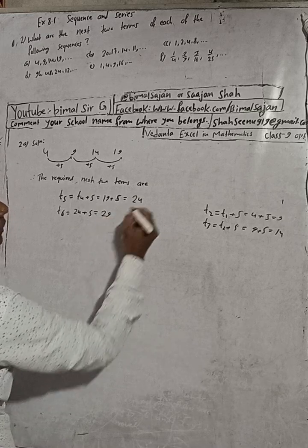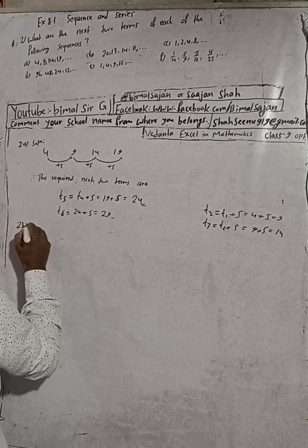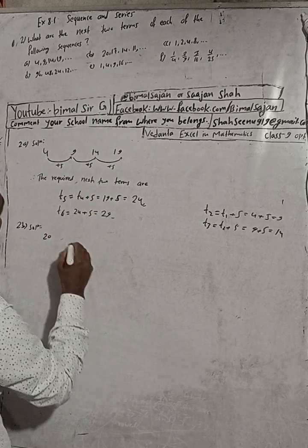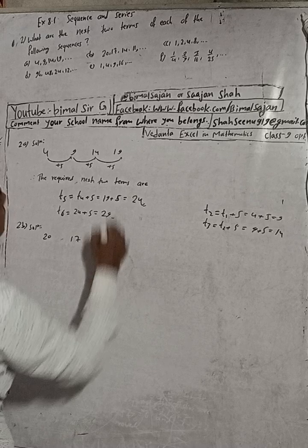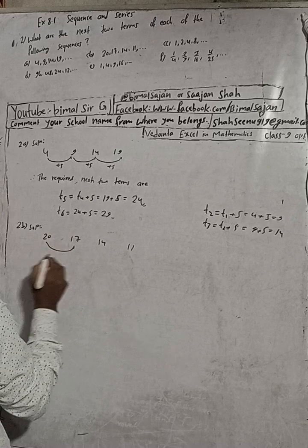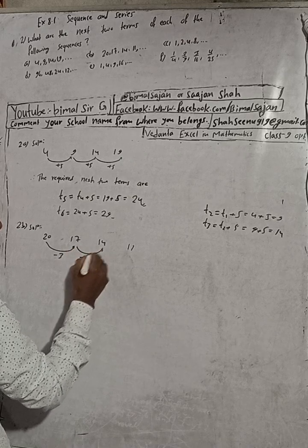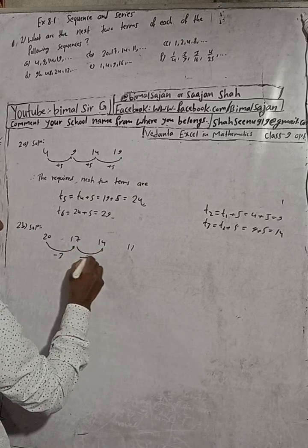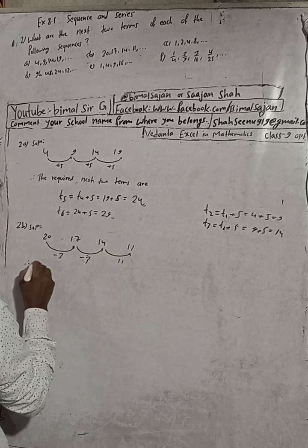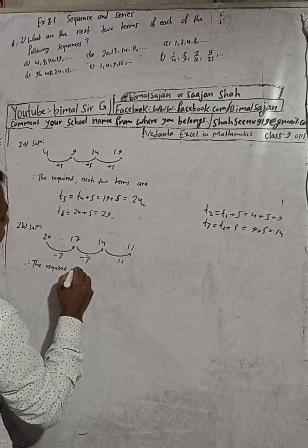Now part (b). The sequence is 20, 17, 14, 11. When we go from one term to the next, we see the sequence is decreasing. From 20 to 17, we subtract 3. From 17 to 14, we subtract 3 again. From 14 to 11, we subtract 3. So the common difference is minus 3. Therefore the required next two terms are: